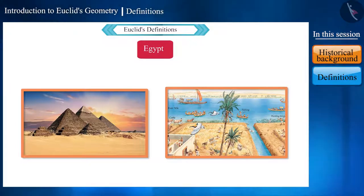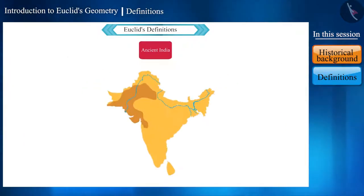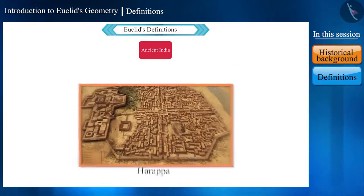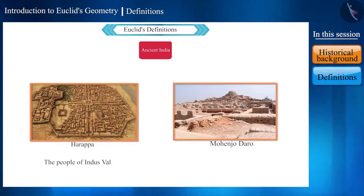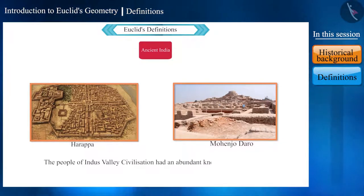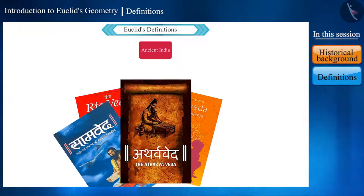Looking at the canals and pyramids, we can easily say that they used their knowledge in their construction also. In the Indian subcontinent as well, by seeing the design and arrangement of cities such as Harappa and Mohenjodaro found during excavation, one can realize that the people of Indus Valley civilization also had an abundant knowledge of geometry.